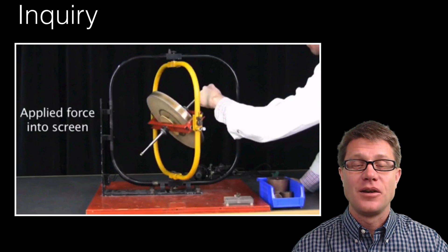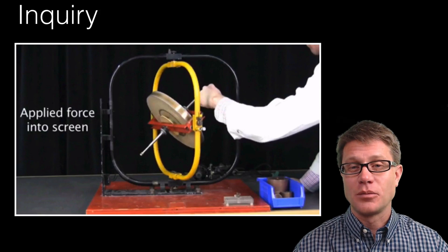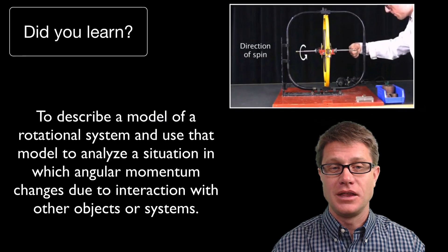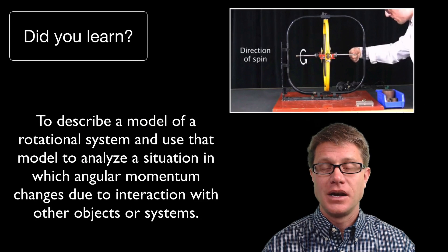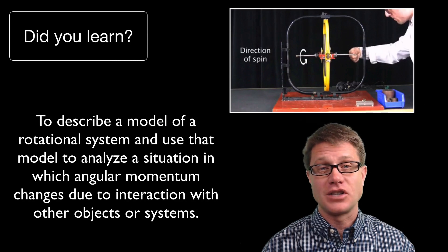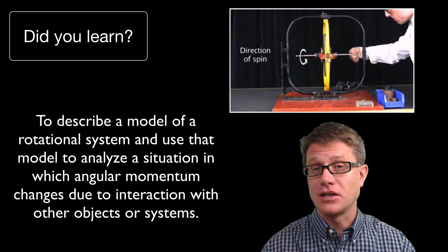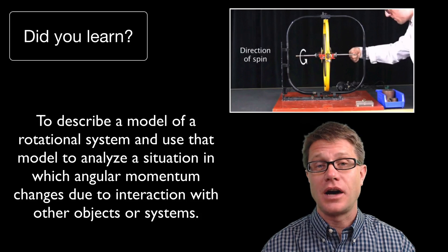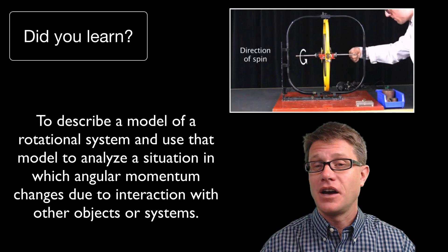So again, what is the angular momentum of a system? It is the angular momentum of all the objects within that system. A gyroscope is a really good model — you could analyze what happens when we add multiple objects to a system. I hope that was helpful.